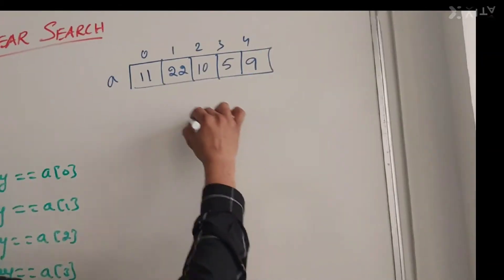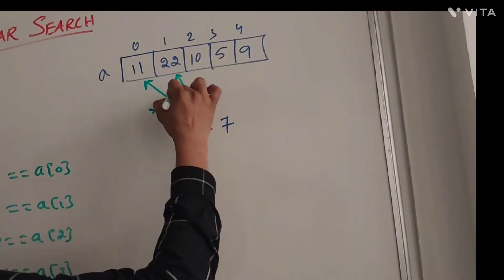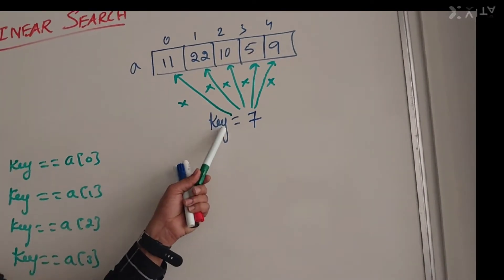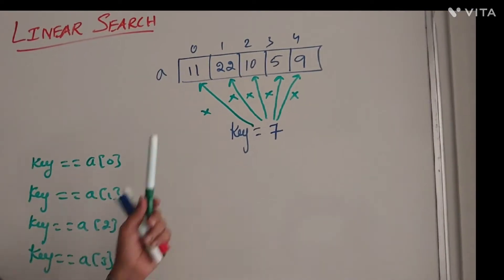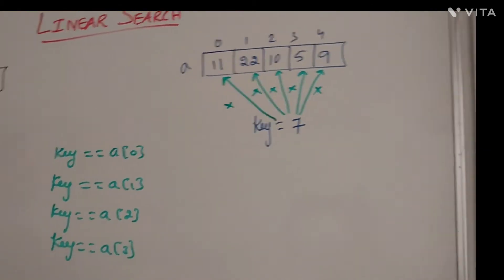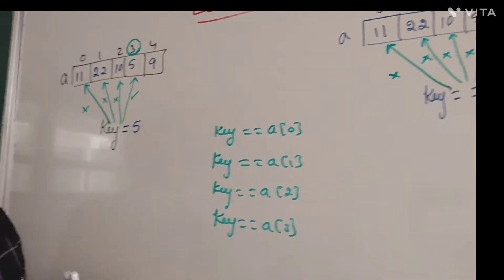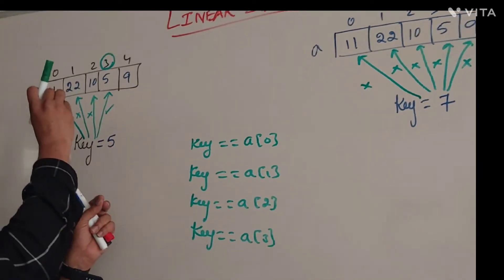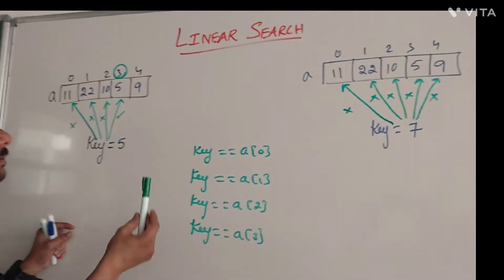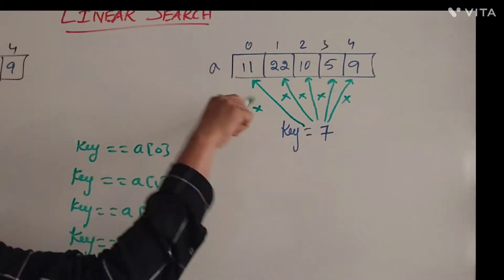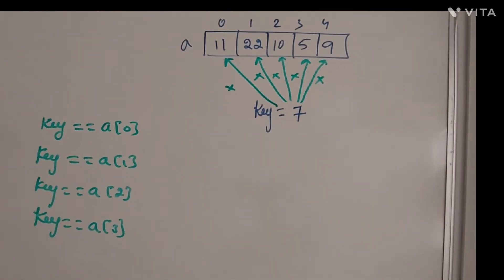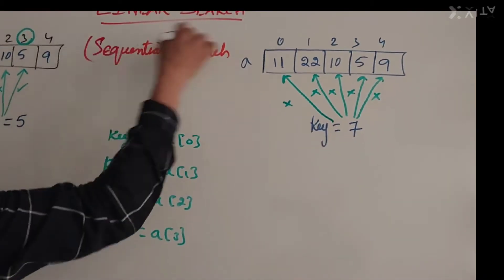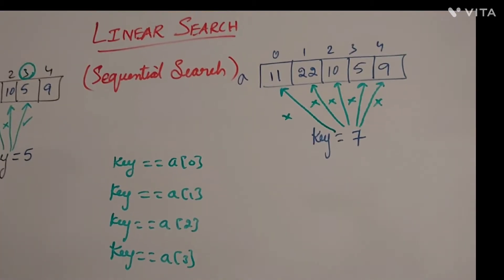With a different key element, when we compare it with a[0] — not matching; compare the next — not matching; compare the next — not matching; and so on. After comparing the key element with all the elements one after another, we do not find it — this is an unsuccessful search. In summary, we compare the key element with the first element; if no match, we compare with the next — in serial fashion — hence linear search is also called sequential search.